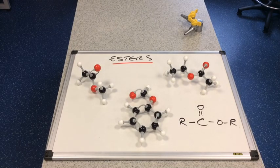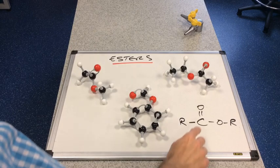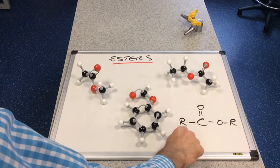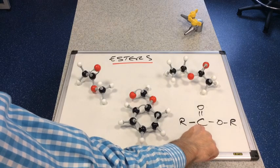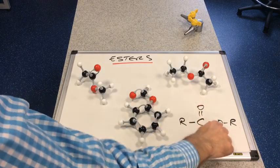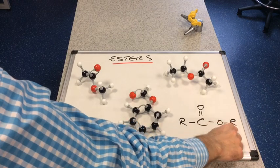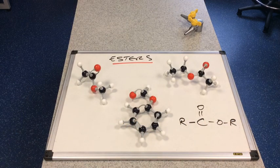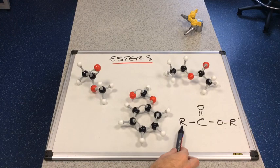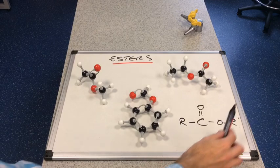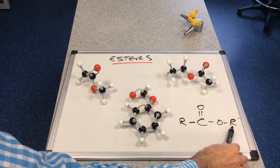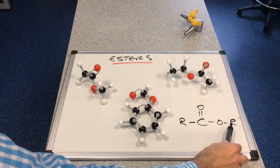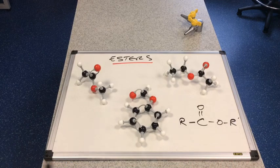We'll start by looking at the functional group of an ester. We've got an R group, then a C double bond O, single bond O, connected to another R group. These R groups can be the same or they can be different. This first R group could be a hydrogen, but the second R group can't be a hydrogen, because if that were a hydrogen you would just have a carboxylic acid.